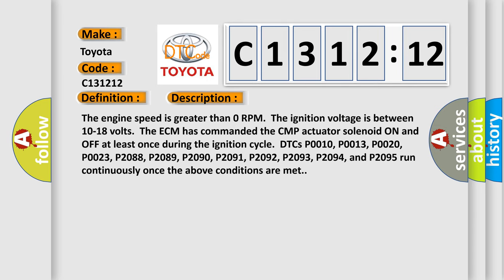And now this is a short description of this DTC code. The engine speed is greater than zero RPM. The ignition voltage is between 10 to 18 volts.